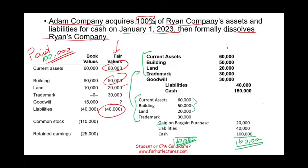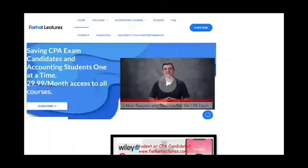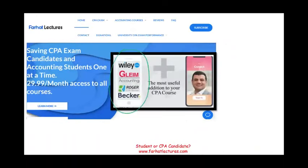This is basically how goodwill is created. It's created when you pay more than the net identifiable assets of the company you are purchasing. When one company buys another company, goodwill might be created. Goodwill has an unlimited life — it is not subject to amortization. Instead, it is subject to impairment, which we also learn about in this chapter. This is important foundational information whether you are an accounting student or studying for the CPA exam.